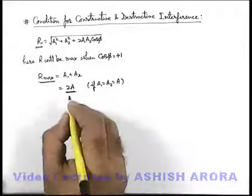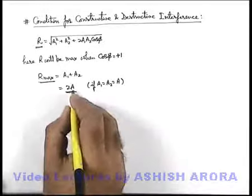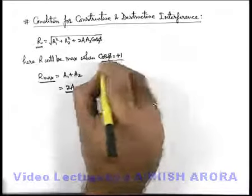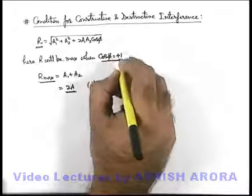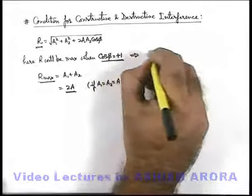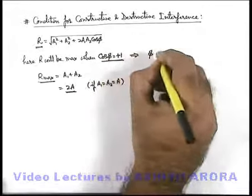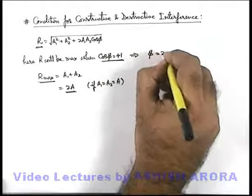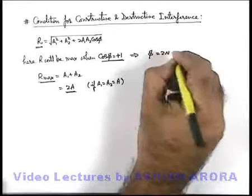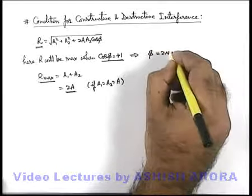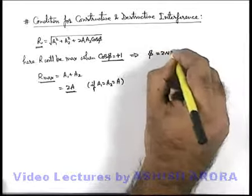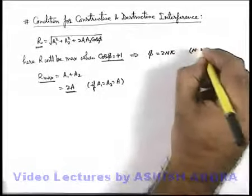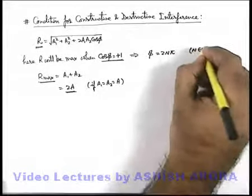The resulting amplitude after interference is maximum at a medium particle when cosφ equals 1. cosφ will be 1 when the phase difference between the two waves can be written as an even multiple of π, that is 2nπ, where n belongs to the set of integers.